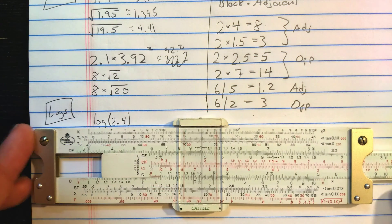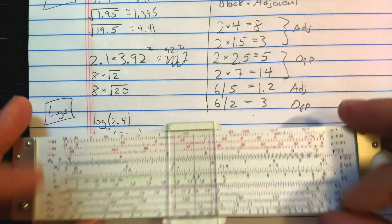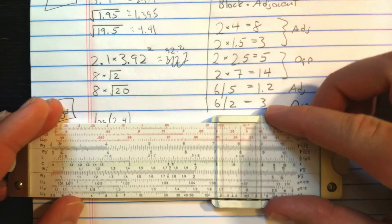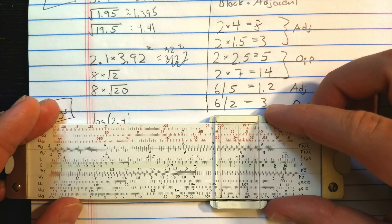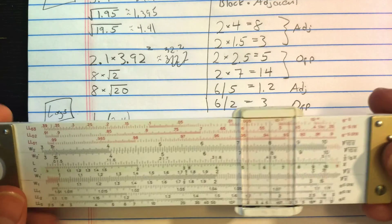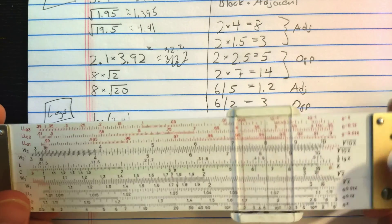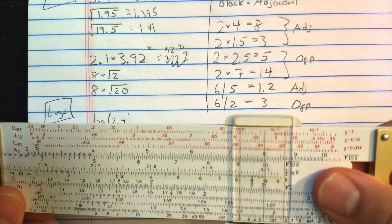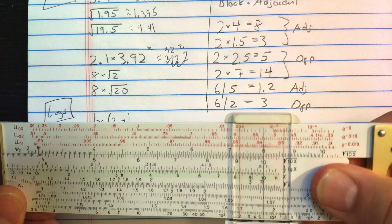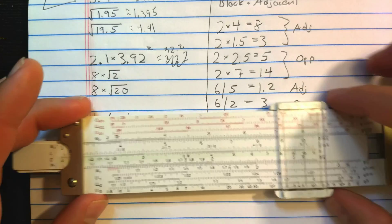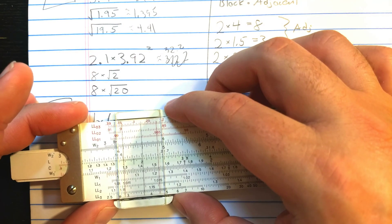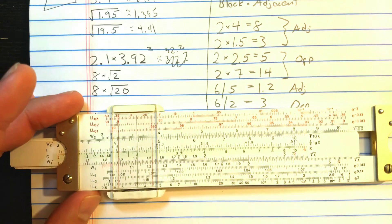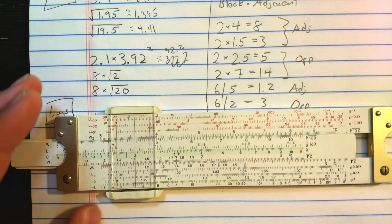Okay. If you want to do 8 times square root 2, this is where you should use the W scale as your main scale. So let's find 8 on W2. Then the C scale is half the length, so I could multiply by square root 2 by finding the index here. Then going out to the 2 on C. To divide, you could align the 2 on C with that 8 and then go out to the index.